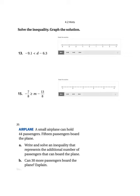So the first problem I'm going to solve for you is number 13. And remember, we want to get d by itself, just like we did with equations. So I'm going to add 6.3 to each side. And I get, let's see here, 9.1 minus 6.3 is 2.8, and it's negative. So I have negative 2.8 is less than d.